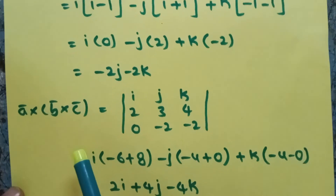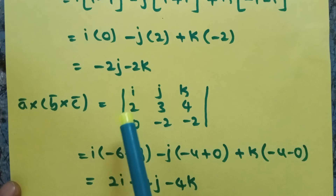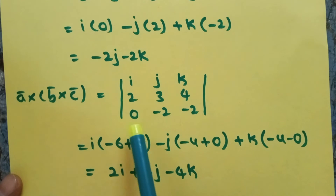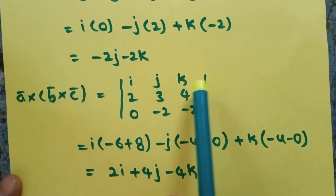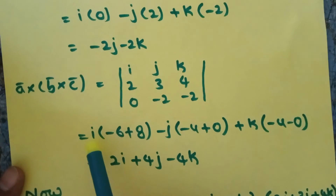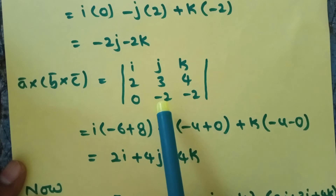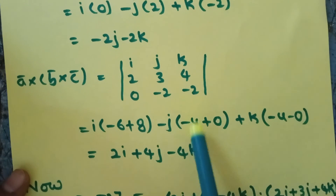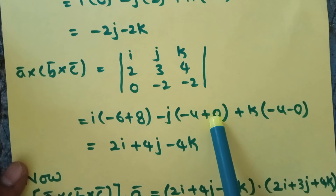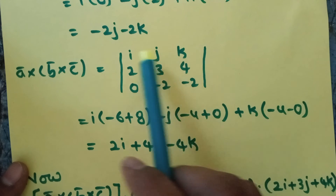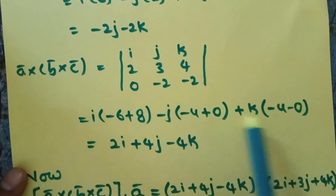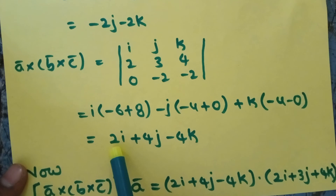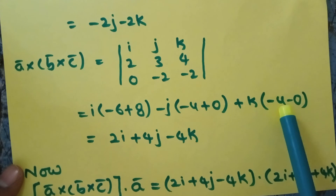Next, A cross (B cross C): determinant of i, j, k; A components are 2, 3, 4; B cross C components are 0, minus 2, minus 2. Expanding: i of (3 into minus 2 gives minus 6, minus 4 into minus 2 gives plus 8), so i of 2 gives 2i. Minus j of (2 into minus 2 gives minus 4, minus 0 into 4 gives 0), so minus j of minus 4 gives plus 4j. Plus k of (2 into minus 2 gives minus 4, minus 0 into 3 gives 0), so k of minus 4 gives minus 4k. Therefore A cross (B cross C) equals 2i plus 4j minus 4k.